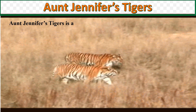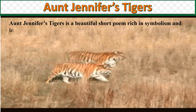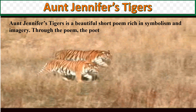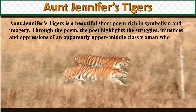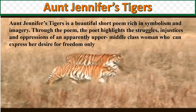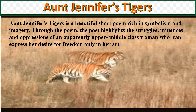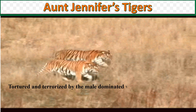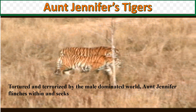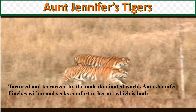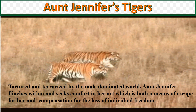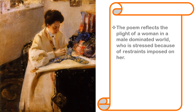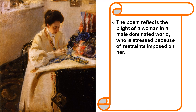Aunt Jennifer's Tigers is a beautiful short poem rich in symbolism and imagery. Through the poem, the poet highlights the struggles, injustices and oppressions of an apparently upper-middle-class woman who can express her desire for freedom only in her art. Tortured and terrorized by the male-dominated world, Aunt Jennifer recoils within and seeks comfort in her art, which is both a means of escape and a compensation for the loss of individual freedom. The poem reflects a woman stressed by social restraints and the responsibility of being an ideal wife.